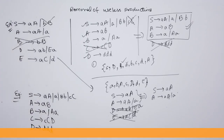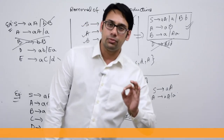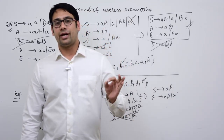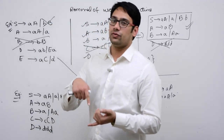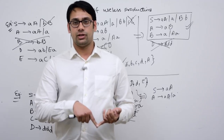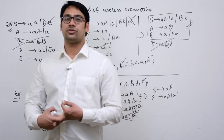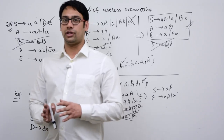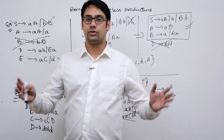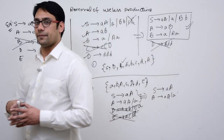These examples are enough to understand the concept. Whenever you want to minimize a given grammar, you have to follow three steps: identify and remove all useless symbols, remove all unit productions, and remove all epsilon productions, because those are not doing effective work. With the help of all three techniques, you can minimize a given grammar.